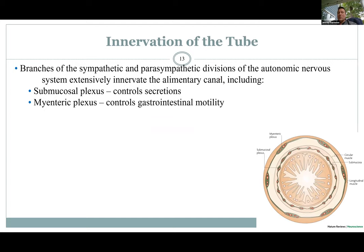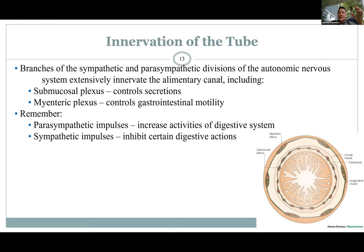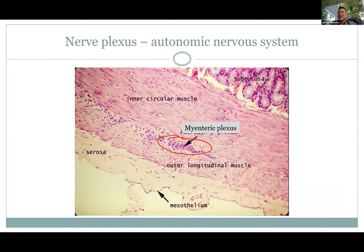The innervation of the gut is important — if it's cut off you can no longer move stuff along, and you get megacolon. The gut is controlled by the autonomic nervous system: parasympathetic gets those muscles going for digestion, while sympathetic inhibits digestion — that's why you shouldn't go swimming right after a big meal. There's a submucosal plexus controlling secretions and a myenteric plexus farther out in the muscle layer controlling motility. Histologically you can actually see neurons as part of the myenteric plexus right there in the tissue.